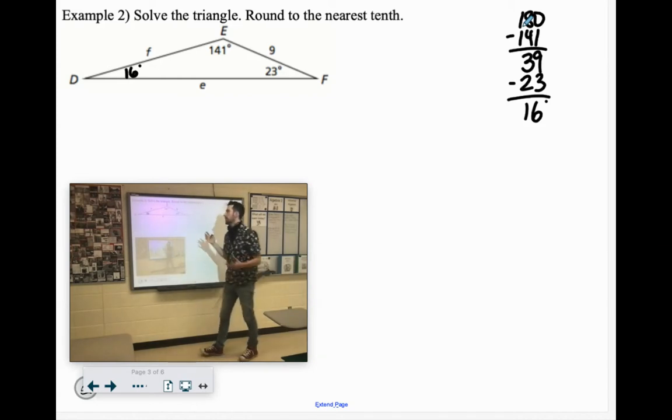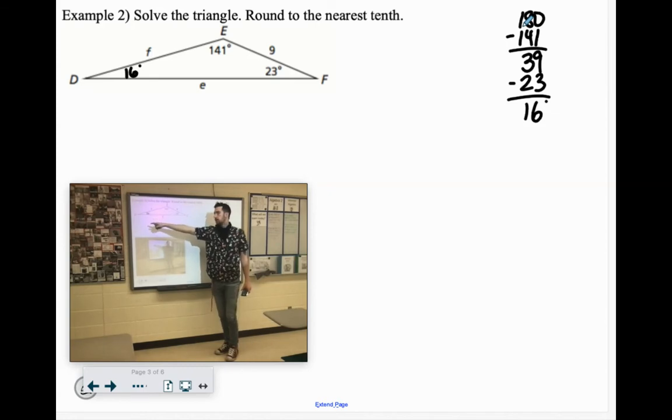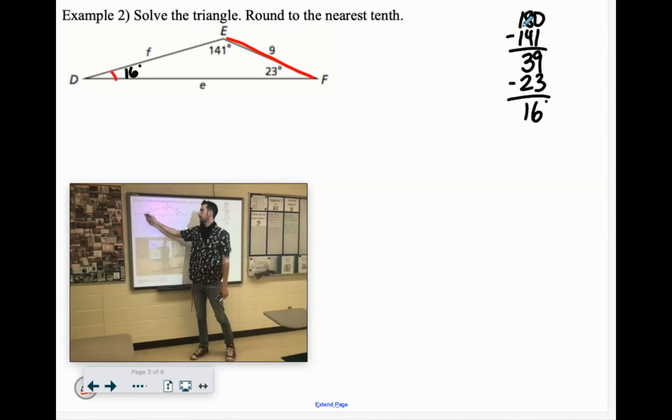Cool. Now we're ready to go. The only side they labeled is this side with E, which matches up with angle D. Did I say E? I meant 9. They labeled this side 9, and that corresponds to angle D.